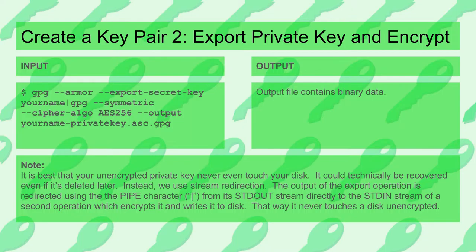Now we have a public and private key pair in our key ring, and it's very important to keep those safe. The first rule is to make a backup. We can back up the entire database — they're just files on disk — but what we really want is to back up specific keys. Not just for backup, but also when we need to distribute specific public keys. We want to export those keys from the database. We'll export a private key to an encrypted file, and then export the public key normally to a file.